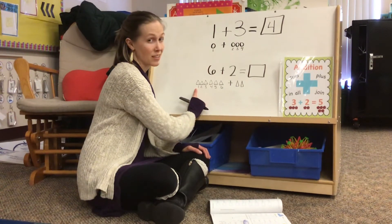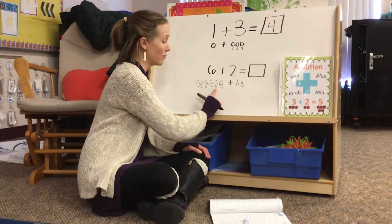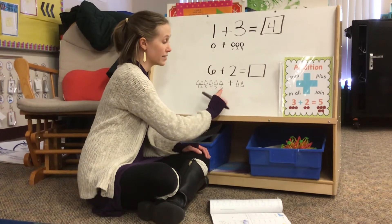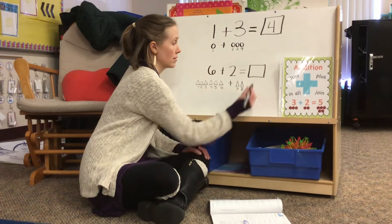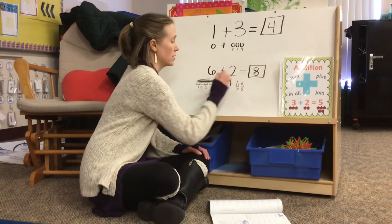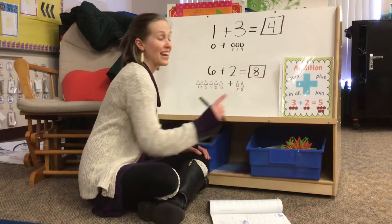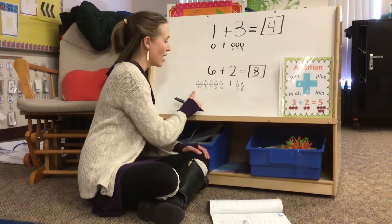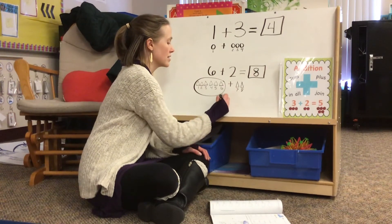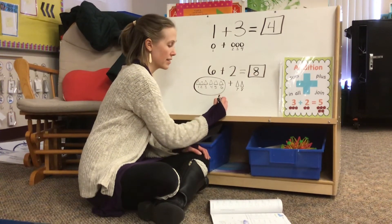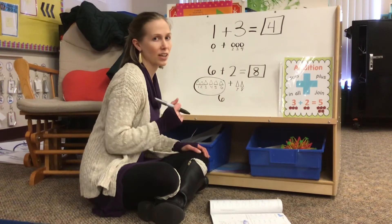I can count this in lots of different ways. I already have six here: one, two, three, four, five, six, seven, eight. Six plus two equals eight. Now some of you might have said, oh I know — here is six, seven, eight — and you might have counted on. That's okay too.